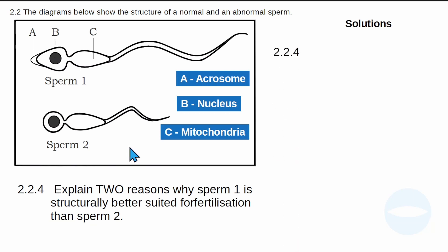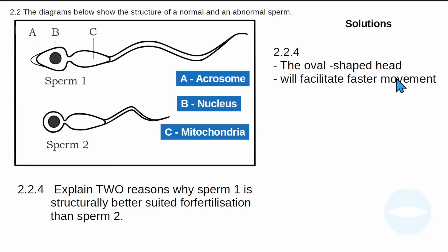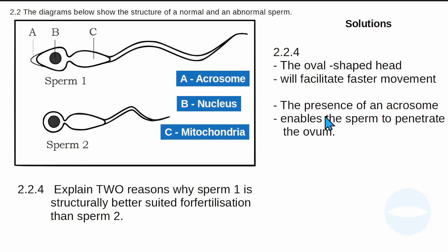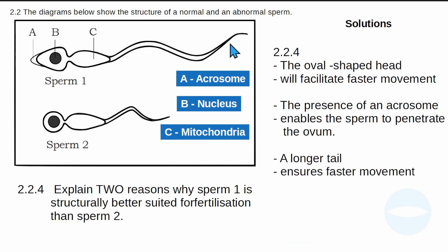To answer question 2.2.4: first, sperm 1 has an oval-shaped head which facilitates faster movement. Second, the presence of an acrosome enables the sperm to penetrate the ovum, as the acrosome contains enzymes needed for penetration — without it, penetration is not possible. Third, sperm 1 has a longer tail, which ensures faster movement towards the ovum.